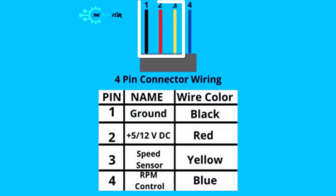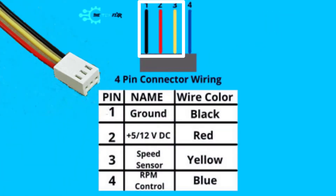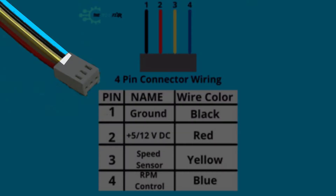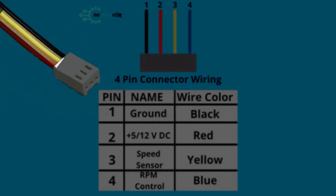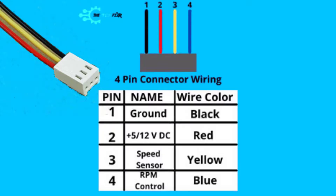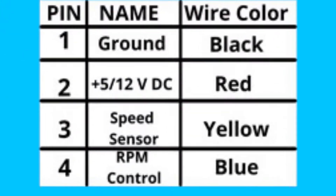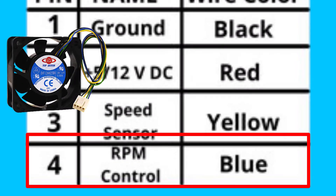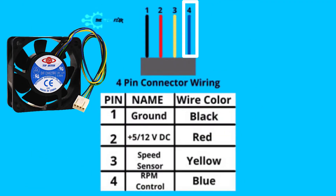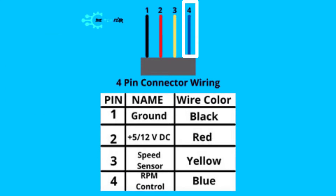The common 3 wires or pins are: a wire for ground connection at 0V, a live wire at 12V or 5V, and a connection for the fan speed sensor. The extra 4th pin or wire that you find on 4-pin fans is the PWM mode connection that controls the RPM speed.